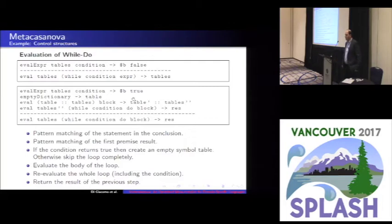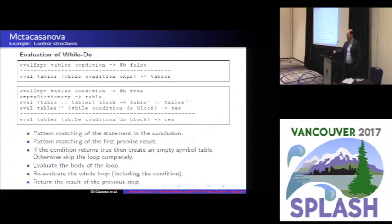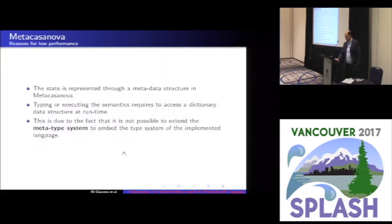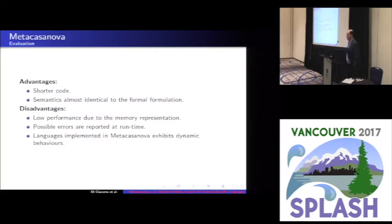The while-true case is more complex: we push an empty table for the local scope, evaluate the loop block, pop the local scope, and then re-evaluate the while completely. The advantage of this approach is that the code is quite shorter — about five times shorter as quantitative results will show — and the semantics is very similar to the formal operational semantics definition, not identical but very close.